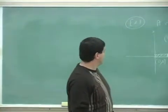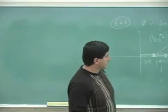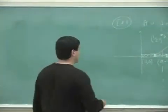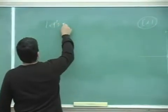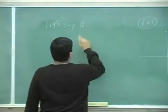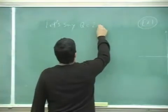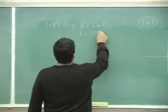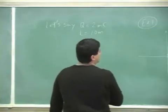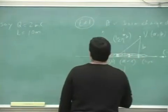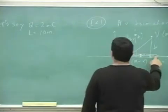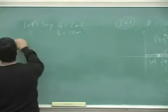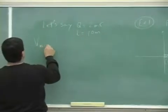Now, if it's, let's say I give it some numbers so we can actually see what we get here. Let's assume, let's say, q is equal to 2 millicoulombs, and l is equal to 10 meters. If l is equal to 10 meters, q equals 2 millicoulombs, what would you get for the v middle axis?